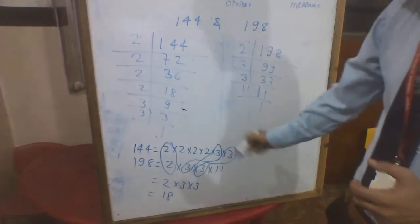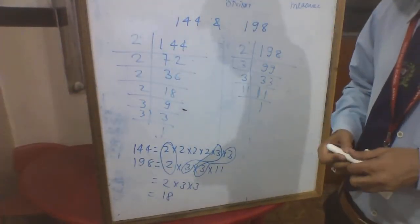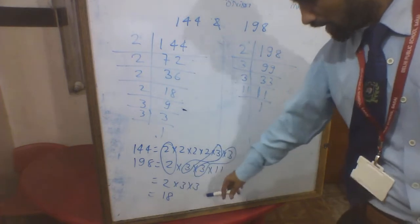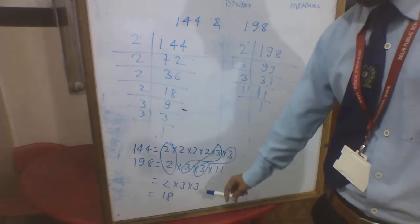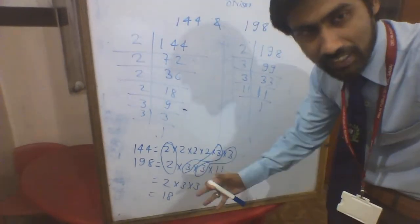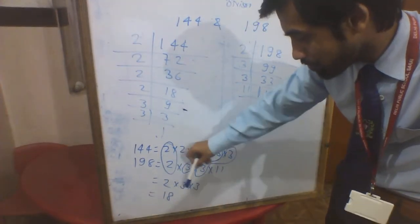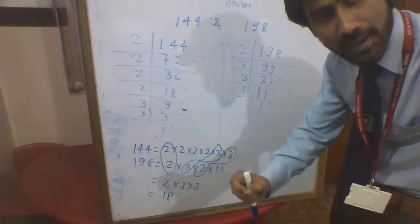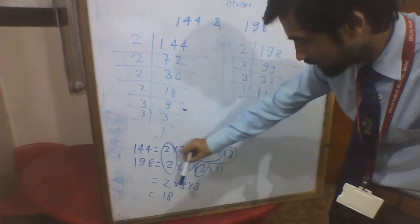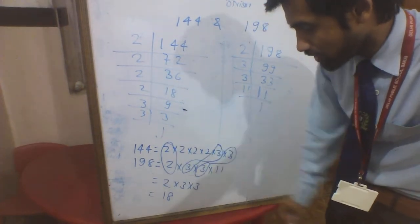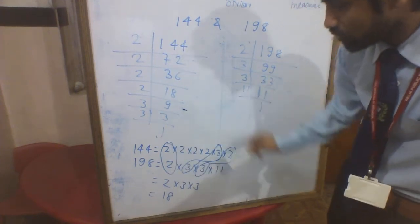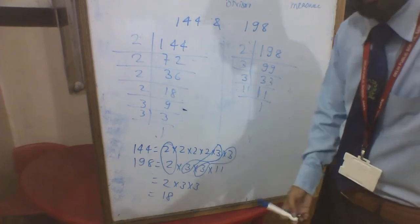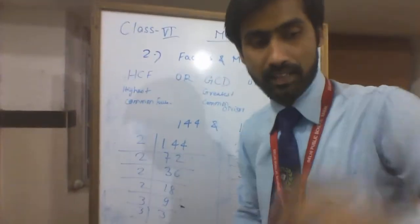In prime factorization, we use prime numbers like 2 and 3. We identify which prime numbers are common in both factorizations, then multiply those common prime numbers together to get the highest common factor. Clear?